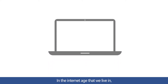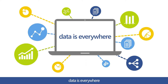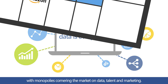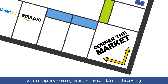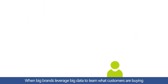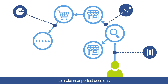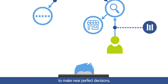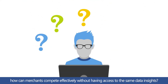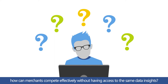In the internet age that we live in, data is everywhere. With monopolies cornering the market on data, talent, and marketing, when big brands leverage big data to learn what customers are buying to make near-perfect decisions, how can merchants compete effectively without having access to the same data insights?